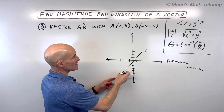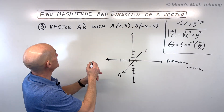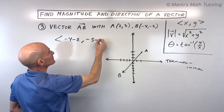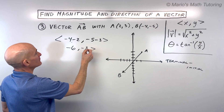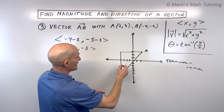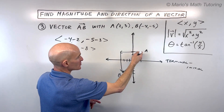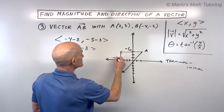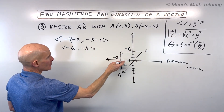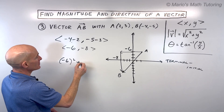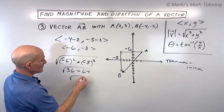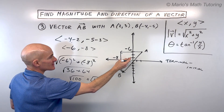That comes out to negative 6 comma negative 8. So this vector is going 6 to the left in the x direction and 8 down in the y direction — that's how we get the resultant vector AB. The x component is negative 6 and the y component is negative 8. To find the magnitude, we use the Pythagorean theorem: the square root of negative 6 squared plus negative 8 squared, which gives us 36 plus 64, the square root of 100, which equals 10. That's the magnitude.